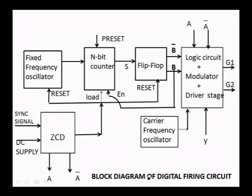The fixed frequency oscillator produces clock pulses for the n-bit counter. The n-bit counter is a preset type n-bit counter. We set the value depending on the desired firing angle. N is the decimal equivalent of the firing angle.